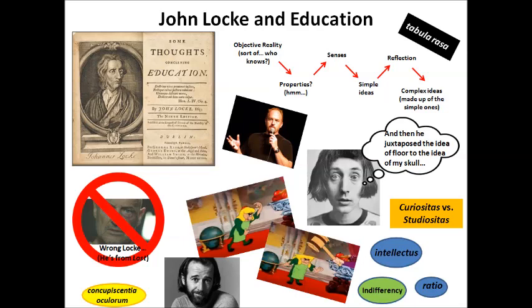Locke contends that our words can only talk about our ideas — that's all we can speak about — and they can't be used to refer to substance, to essence, or to real being in the world. Except of course, says Locke, their significance must agree with the truth of things as well as with men's ideas. Our words can't be signifiers for a reality beyond our ideas — and yet then he says our words must be signifiers for reality beyond our ideas. Locke just can't decide what he wants to say.